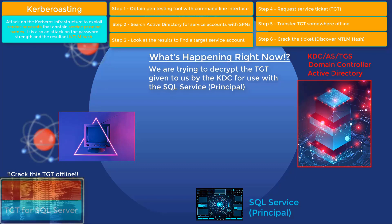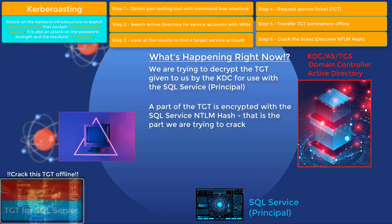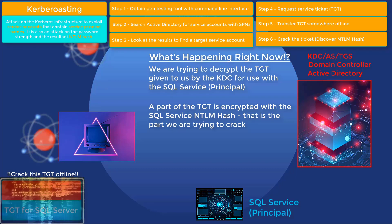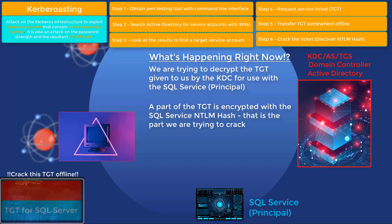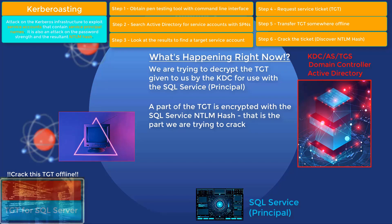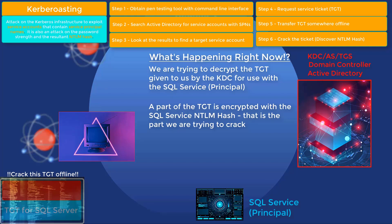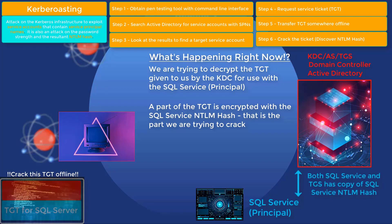We're brute forcing with a dictionary attack on the encrypted Ticket Granting Ticket given to us by the Authentication Service. We're trying to decrypt the ticket that is encrypted with the SQL server's NTLM hash — we do that by guessing the password, hashing it, and trying to decrypt over and over again until we get it. This is essentially what the SQL server also does, except it does it once because it actually has the NTLM hash. The difference is that the SQL server knows its password and the resulting hash legitimately, while we, via Kerberoasting, are trying to guess the password and generate the right hash.